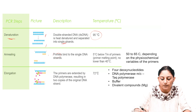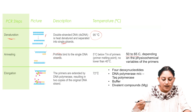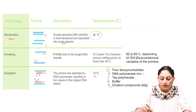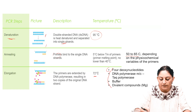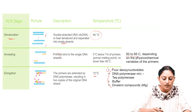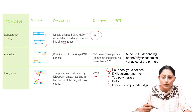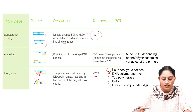For primer binding, the temperature is decreased to 50–65 degrees centigrade. Then the temperature is increased to around 72 degrees centigrade for elongation. In the presence of deoxynucleotides, DNA polymerase, Taq polymerase, buffers, and divalent compounds, the strand starts to elongate. The overall steps are denaturation, annealing, and elongation.